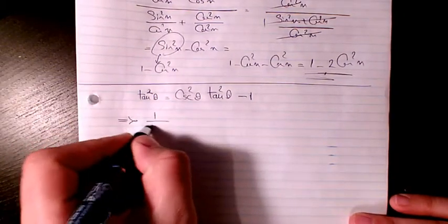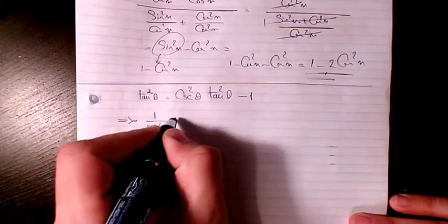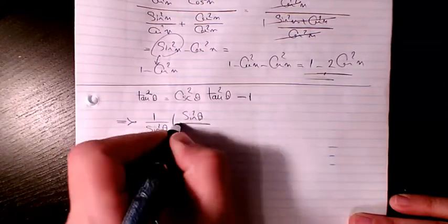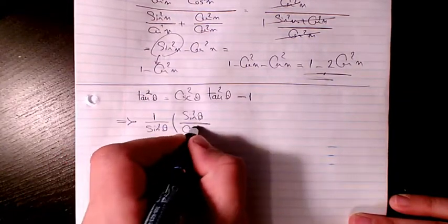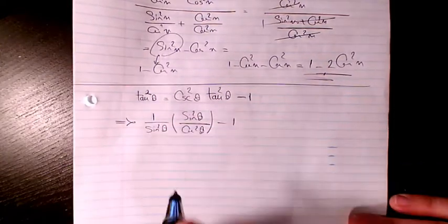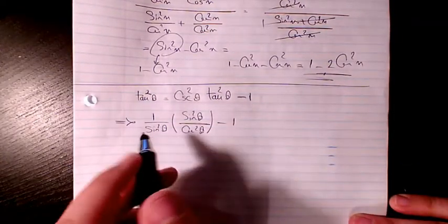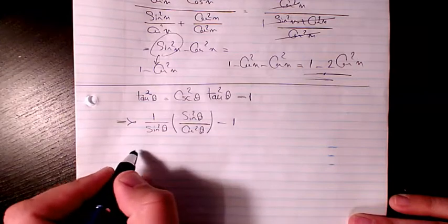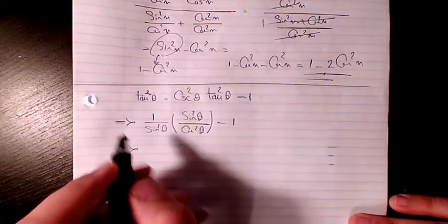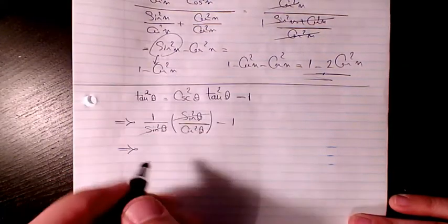So I have 1 over sin squared theta times sin squared theta divided by cosine squared theta minus 1. From here I can say these two cancel out.